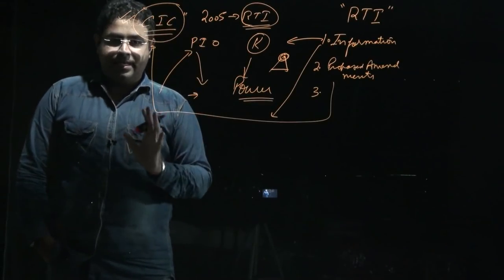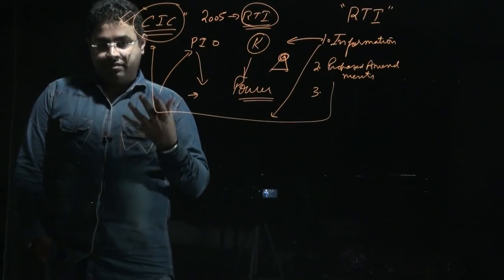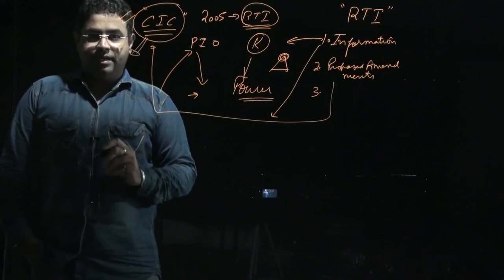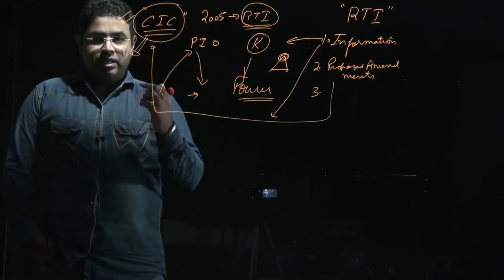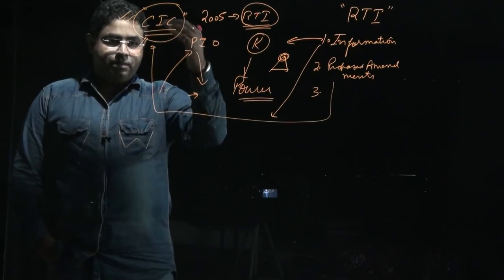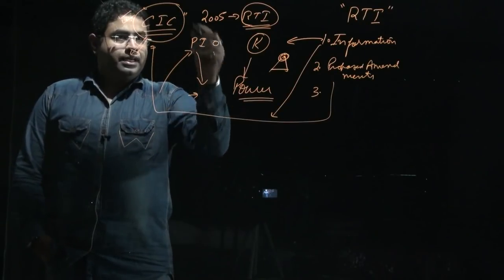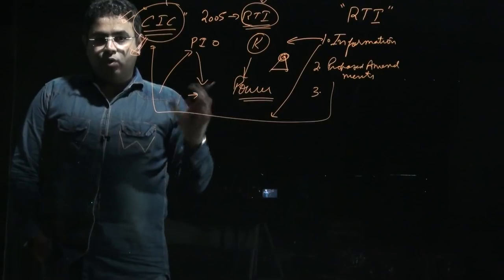Because of that, the government wants to amend the removal procedure, making removal easier. When removal becomes easier, the CIC will not get protection. The entire structure of RTI will become very weak.